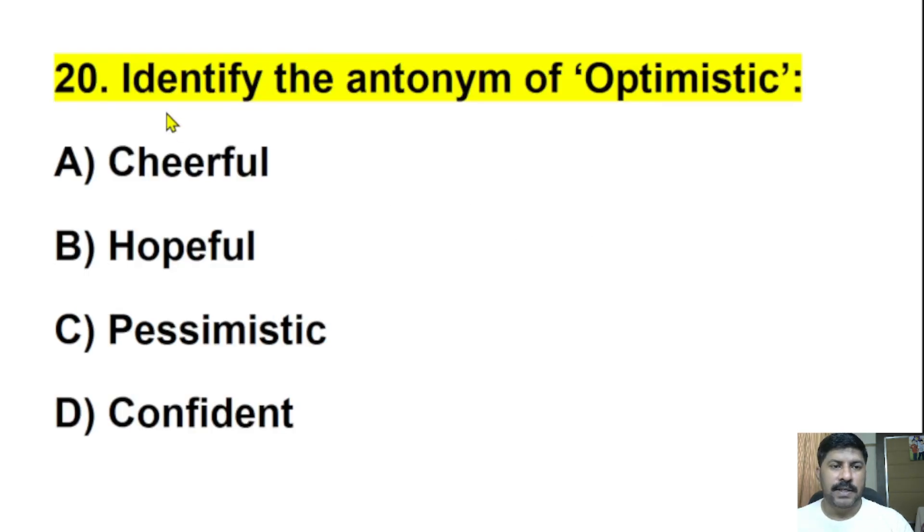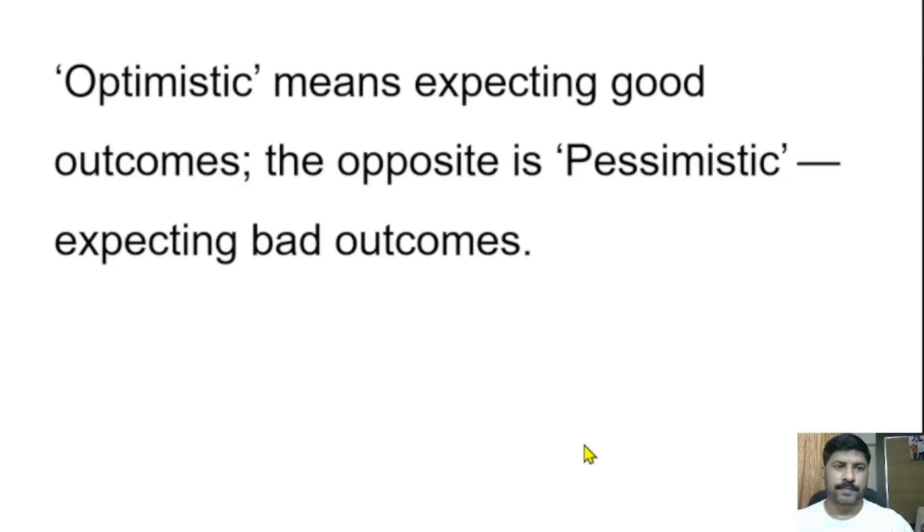Twentieth question: Identify the antonym of optimistic. Fearful, hopeful, pessimistic, or confident? Antonym means opposite. The correct answer is pessimistic. Pessimistic is the opposite of optimistic. Optimistic means expecting good outcomes. The opposite is pessimistic, that is expecting bad outcomes.